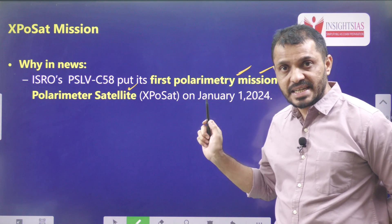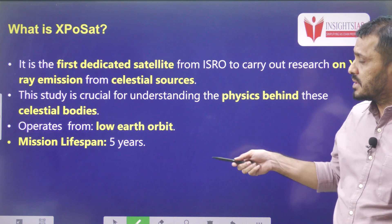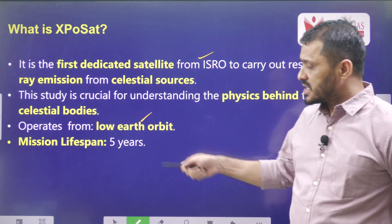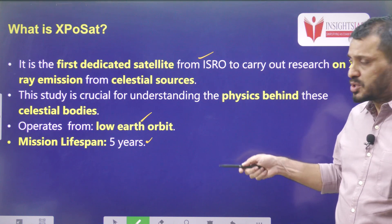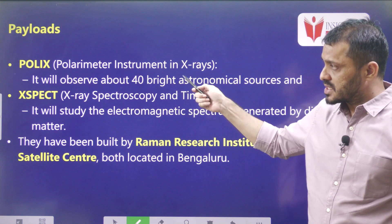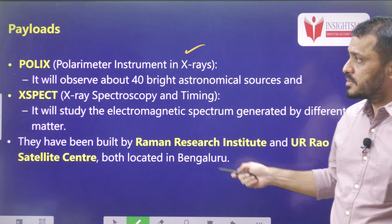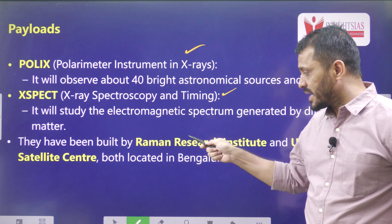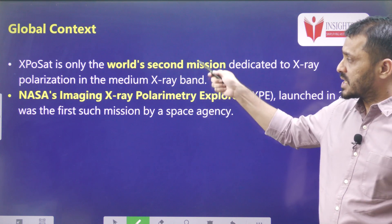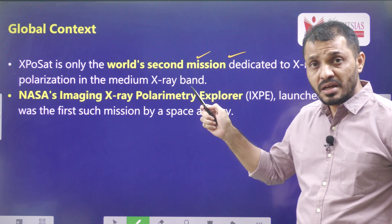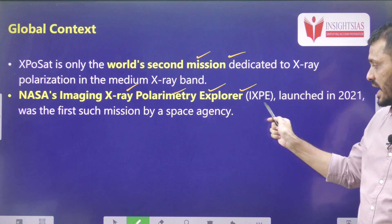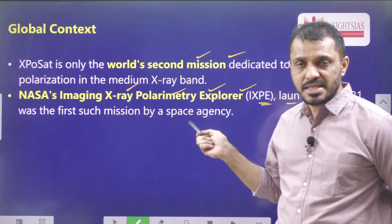Regarding PSLV C-58, it was India's first polarimetry mission, launching the X-ray polarimetry satellite XPoSat, which measures X-rays. It is the world's second dedicated satellite to observe X-rays, and the first from ISRO. This satellite is placed in low Earth orbit with a mission lifespan of 5 years. It observes X-rays emitting from celestial bodies. XPoSat consists of two payloads: POLIX (the main payload) and XPECT. These were developed by the Raman Research Institute and the U.R. Rao Satellite Centre.